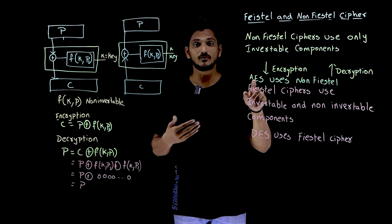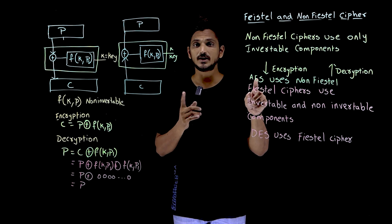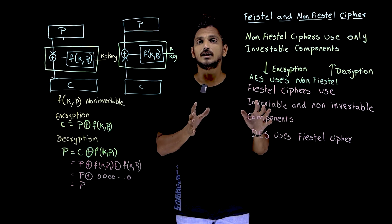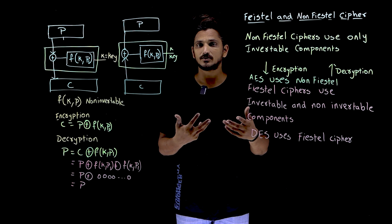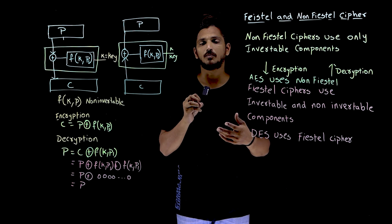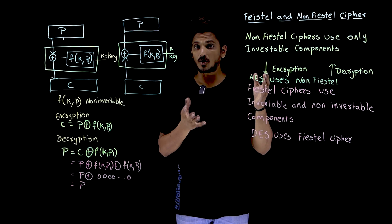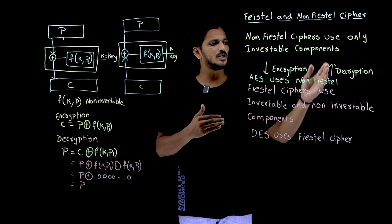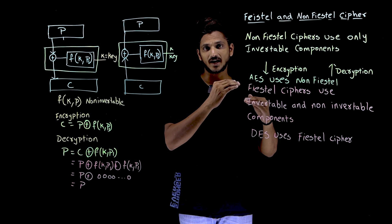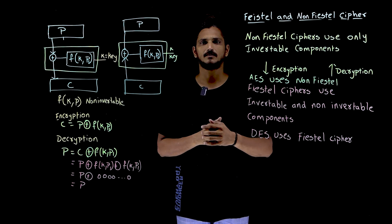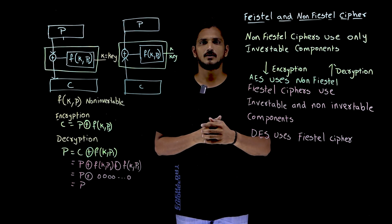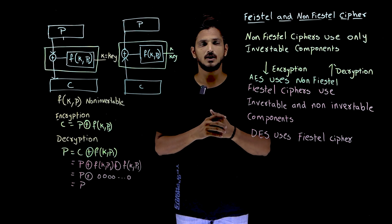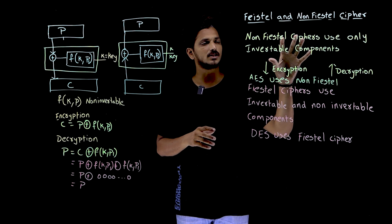In our coming classes, when we discuss about AES — Advanced Encryption Standard — it is going to use non-Feistel ciphers, meaning it is going to use only invertible components. If the component is invertible, during encryption you go through a few steps, and during decryption you do the exact opposite steps to get the plaintext back. This is what non-Feistel ciphers means.